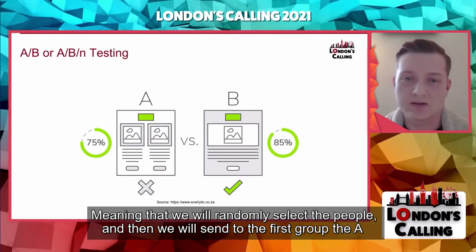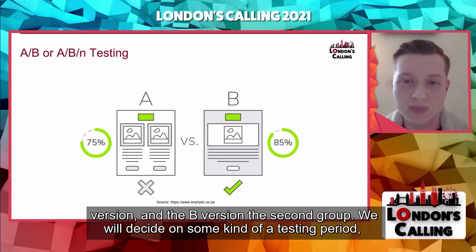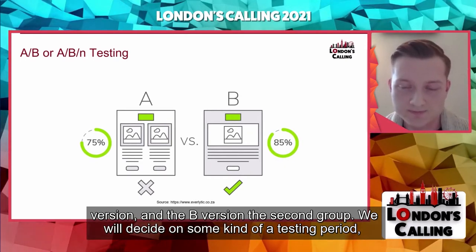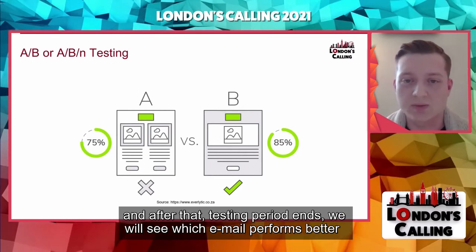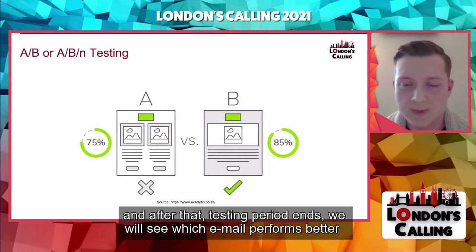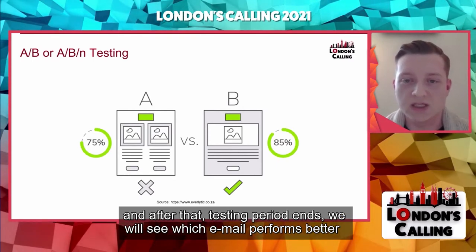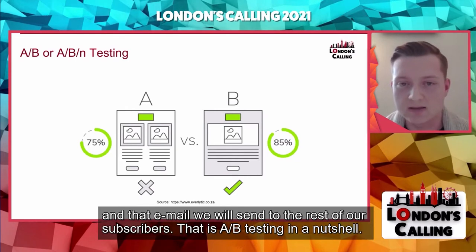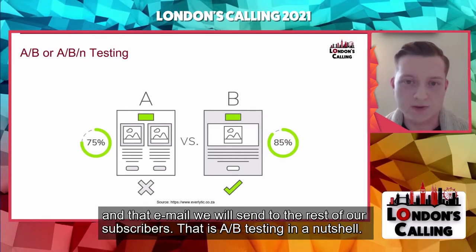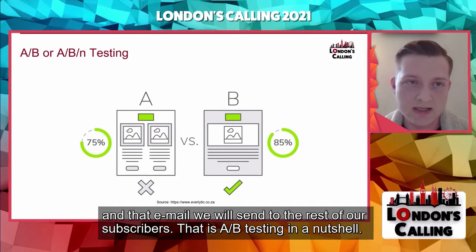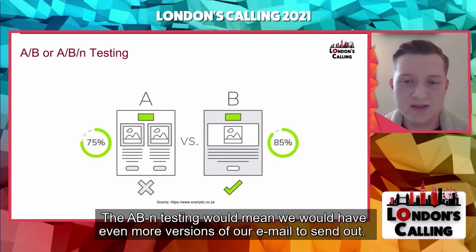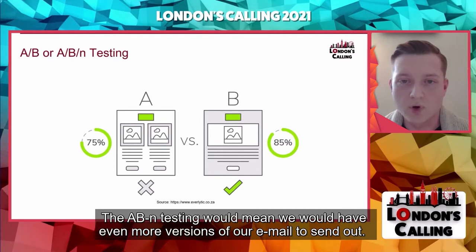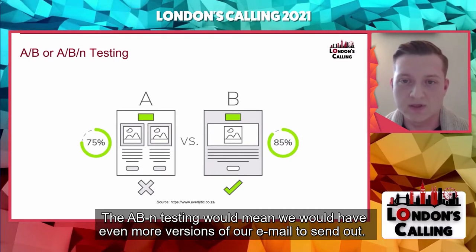We send version A to the first group and version B to the second group. We decide on a testing period, and after that period ends we see which email performed better and send that email to the rest of our subscribers. That is A/B testing in a nutshell. A/B/N testing simply means we have more versions of our email to send out.